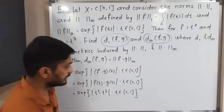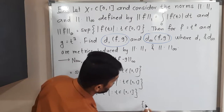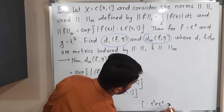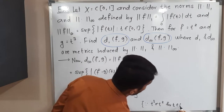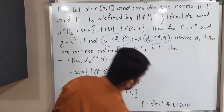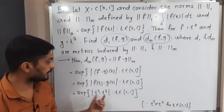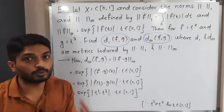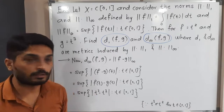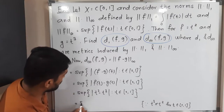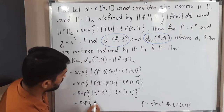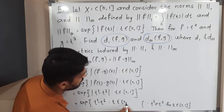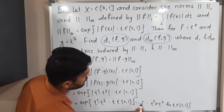As proved earlier, T³ ≤ T² for T in the closed interval [0,1], so we are subtracting the smaller number from the larger. Therefore there is no need for the absolute value, and we have the supremum of (t² − t³) for t in [0,1].